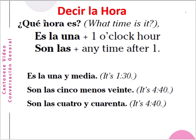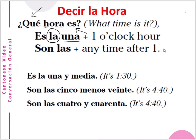¿Qué hora es? — what time is it? Ge is 'what', ora is 'hours' or 'the time', es means 'is it'. Es la una — if it is one o'clock, we use the article la. Es la una — it is one o'clock, one hour.